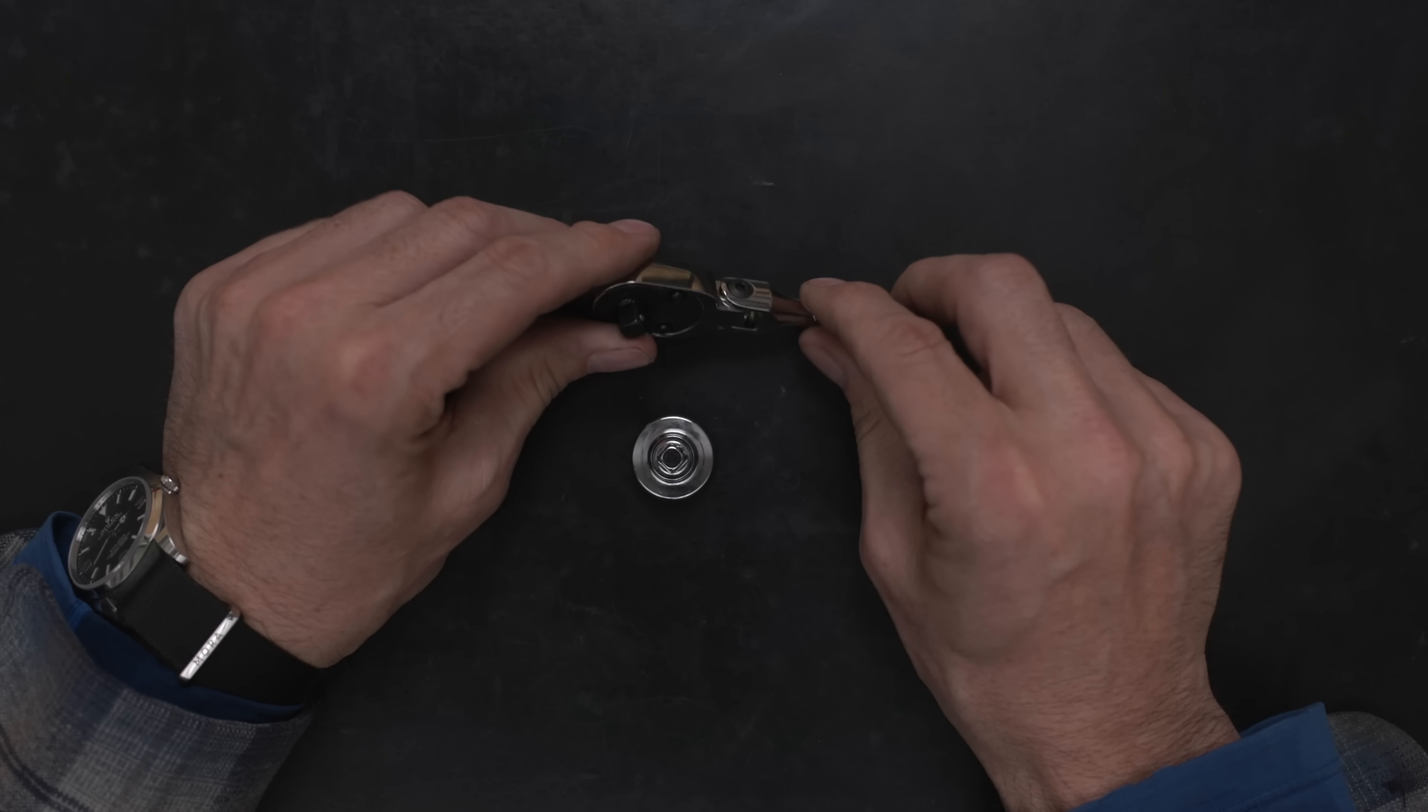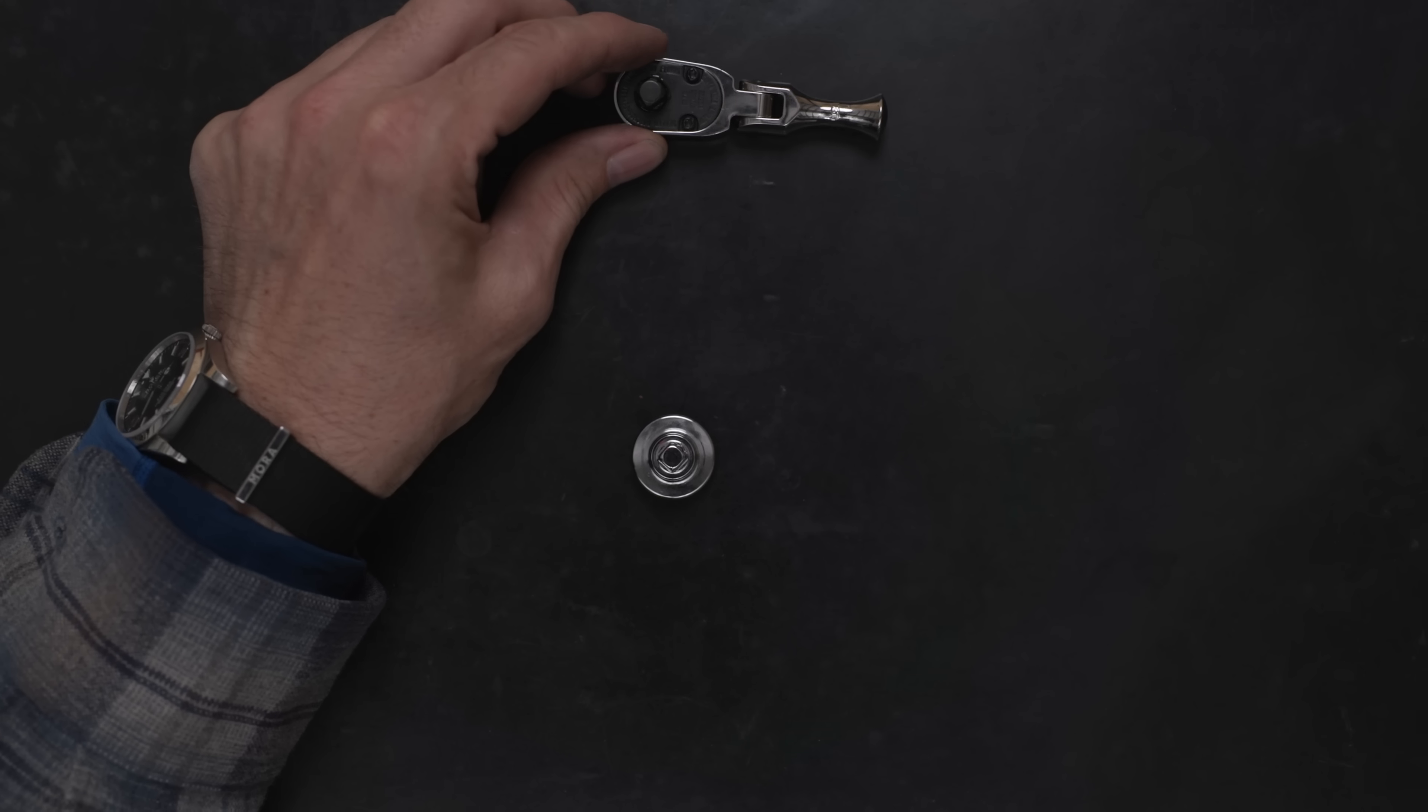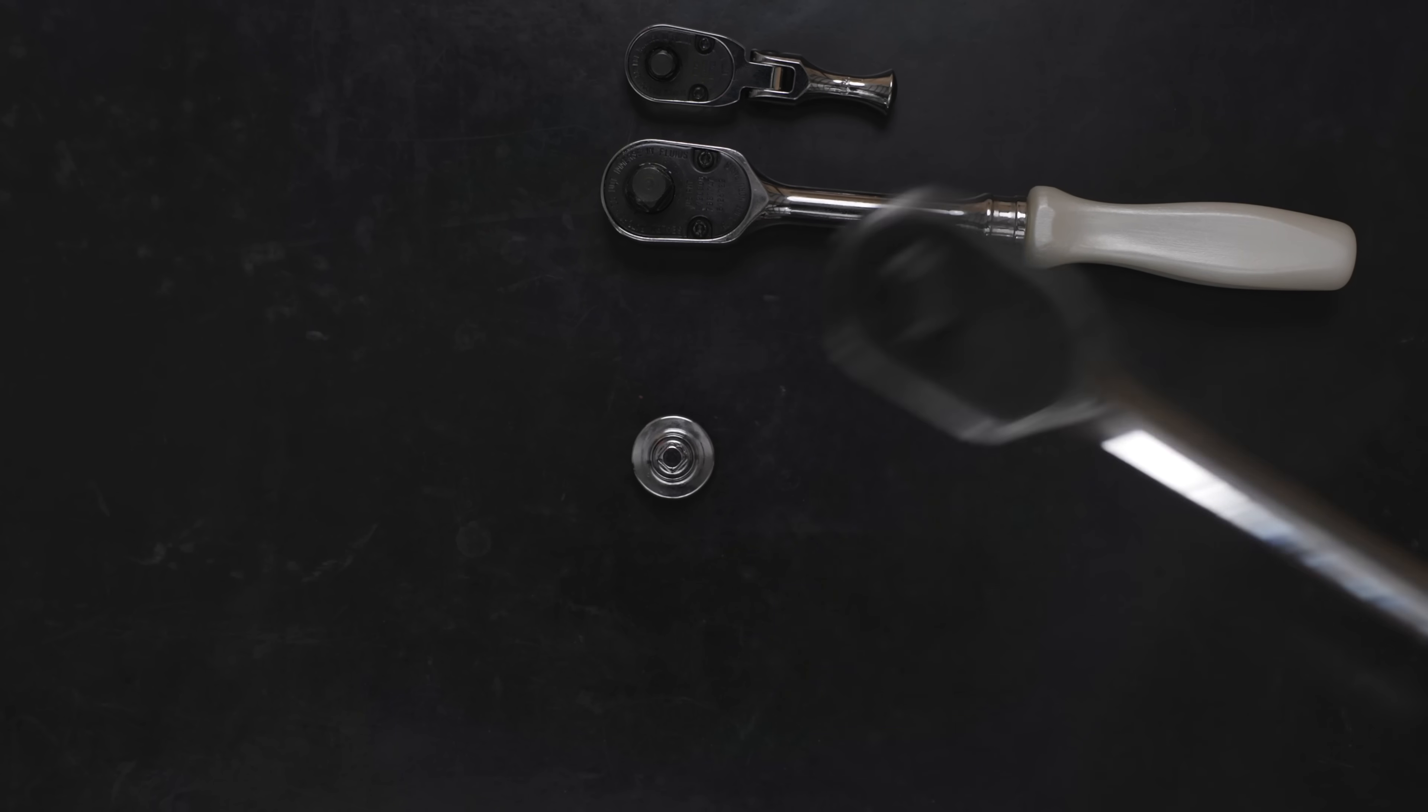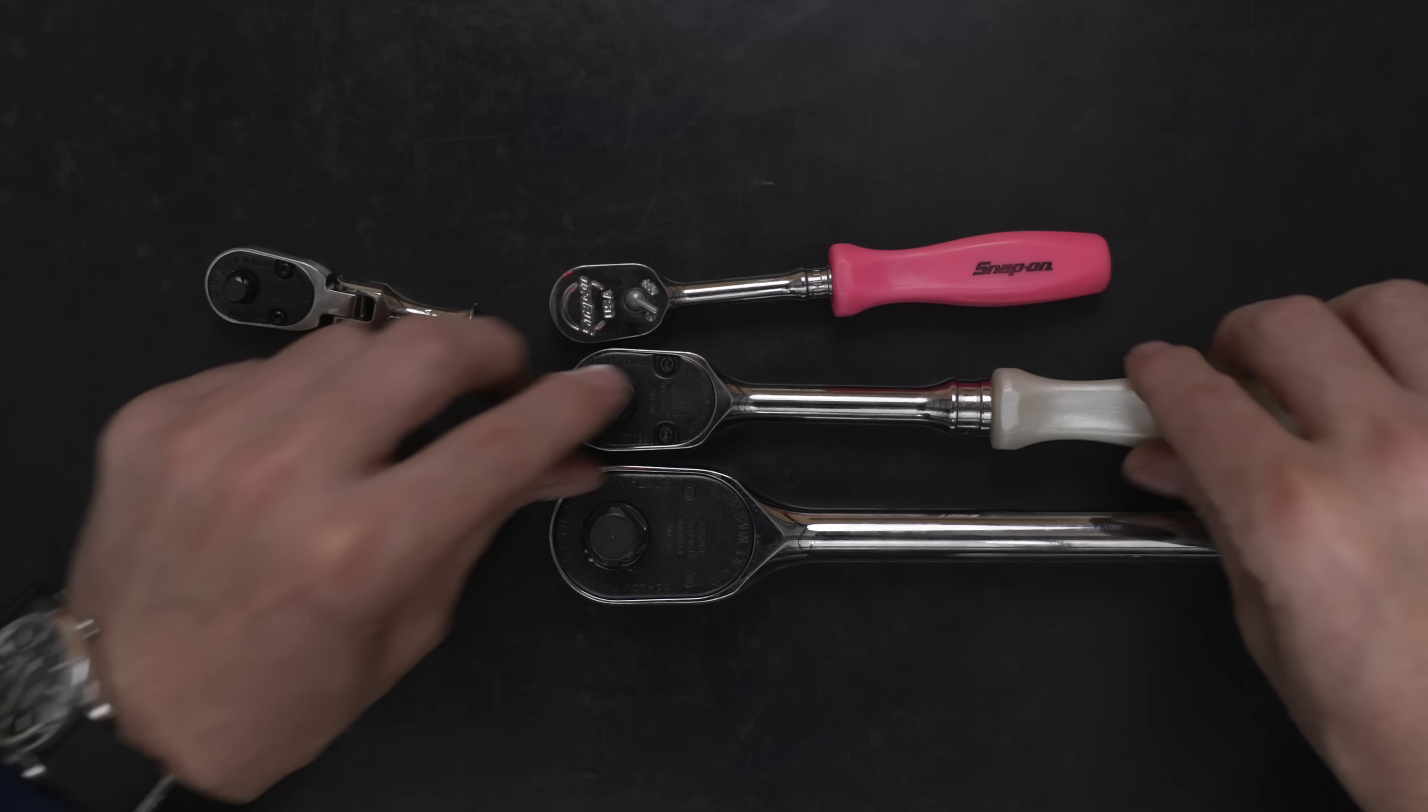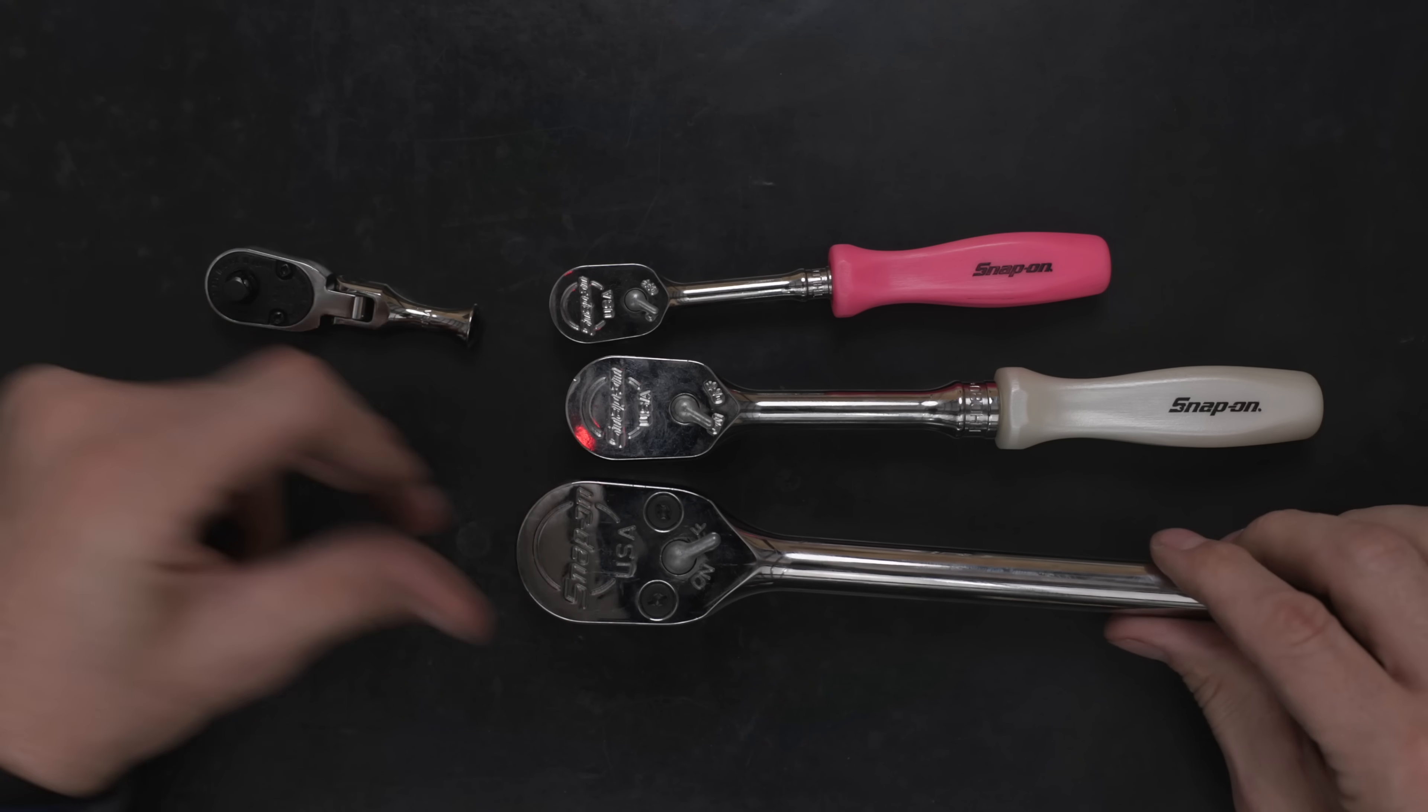Quarter-inch drive tools are the smaller of the ratchet. Just for reference, this is quarter-inch drive, this is three-eighths which is probably the most ubiquitous, and half-inch, just to get an idea of the scale. So this is a normal quarter-inch drive ratchet. What is a quarter-inch drive ratchet for? Why the three different sizes?